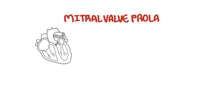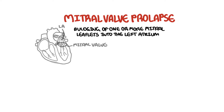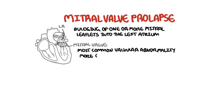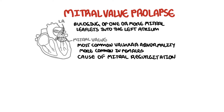Mitral valve prolapse is described as bulging of one or more of the mitral leaflets into the left atrium during systole. It is said to be the most common valvular abnormality, is often benign, and affects more females. Mitral valve prolapse is a cause of mitral regurgitation, and in men it is likely to progress to significant mitral valve regurgitation.